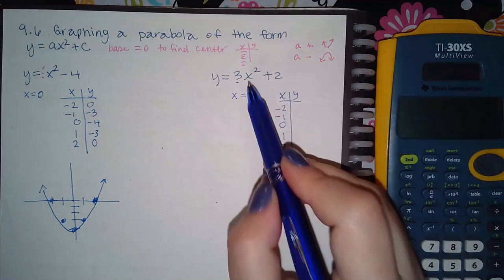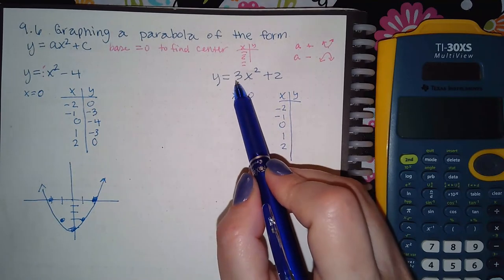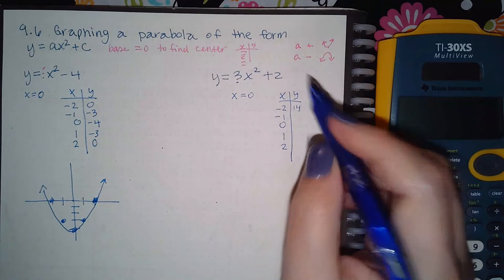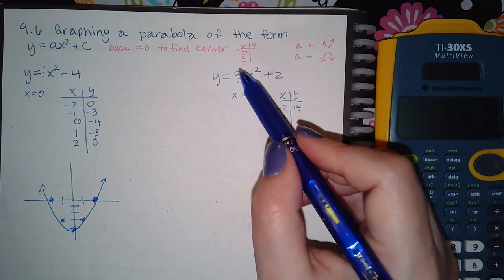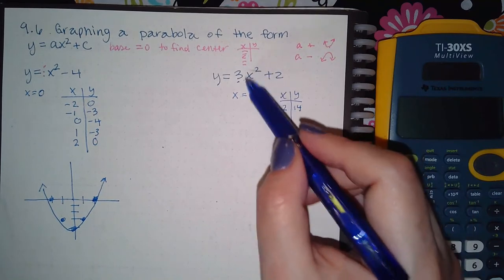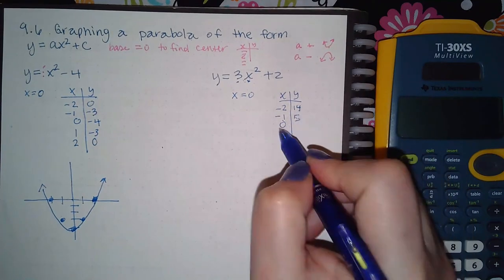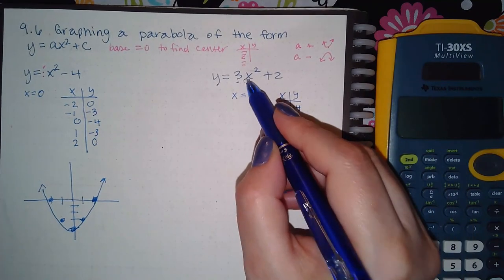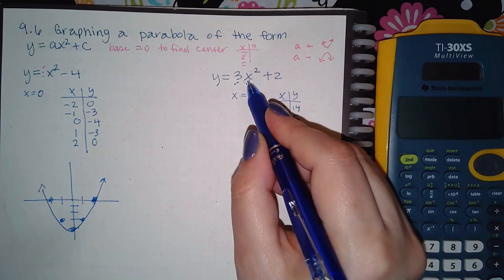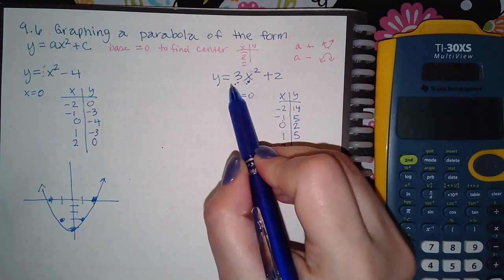And we start plugging them in. So negative two squared is four, four times three is 12, and 12 plus 2 is 14. Plugging in negative one, we get three times a positive one, because negative one squared is positive one. Three times one is three plus two is five. Square the zero, zero times three is zero plus two is two. One squared is one times three is three plus two is five. Two squared is four times three is 12 plus two.